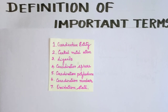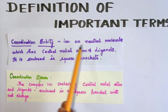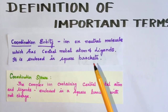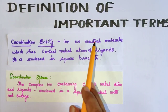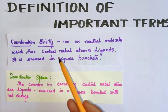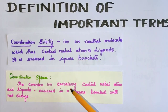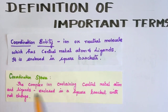Let's start with the first term: Coordination Entity. I will also talk about the fourth term, Coordination Sphere, together, because they are one and the same. Coordination Entity is the ion or neutral molecule which has a central metal atom and ligands enclosed in square brackets. That is the Coordination Sphere - it is an ion or complex containing a central metal atom and ligands enclosed in square brackets with a net charge.